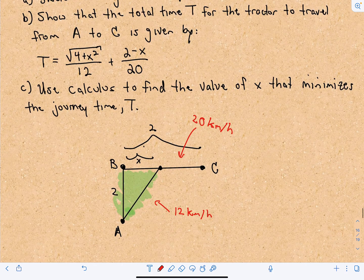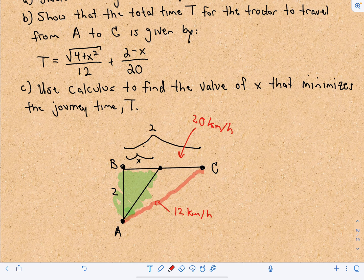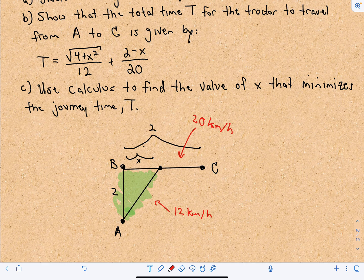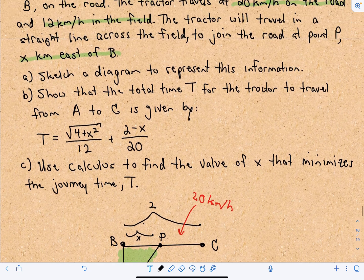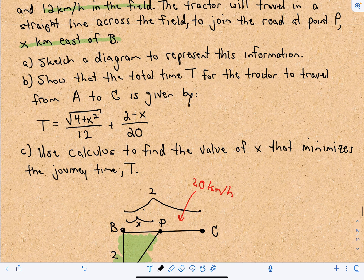He's not just going straight to point B and then over — we're trying to figure out what's the quickest way. Maybe he should go straight to point C along the field, or maybe it's quickest to go part of the way and then along the road. We're trying to figure out exactly where should point P be. Show that the total time T for the tractor to travel from A to C is given by the expression.